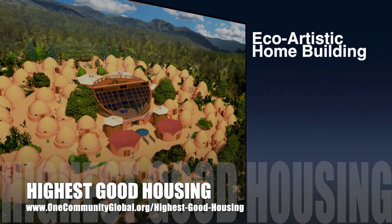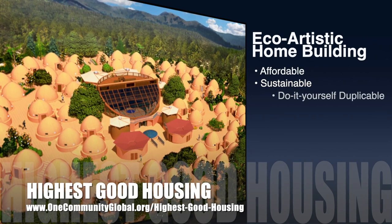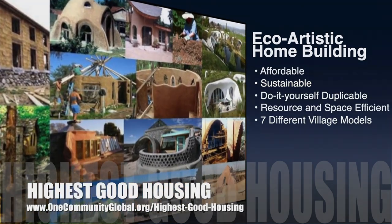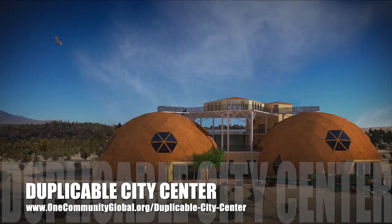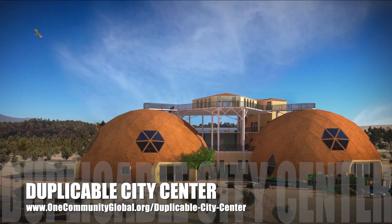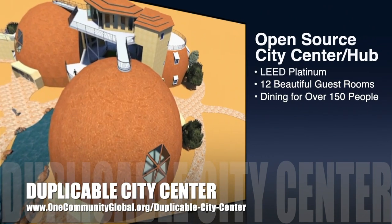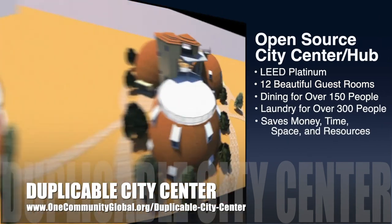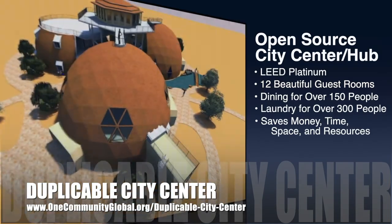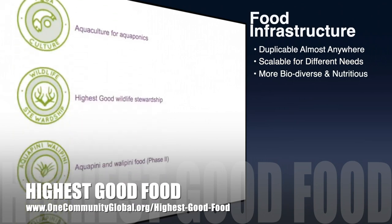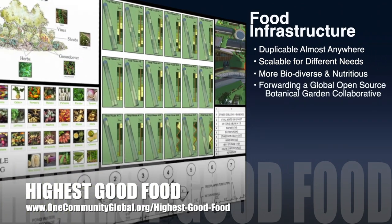The One Community approach to highest good housing is eco-artistic home building that is affordable, sustainable, do-it-yourself duplicable, resource and space efficient, and consists of seven different sustainably constructed village models. One Community is also creating an open source duplicable city center designed to be LEED Platinum certified, provide 12 guest rooms, dining for over 150 people, and laundry and recreation space for over 300 people, all while saving money, time, space, and resources.